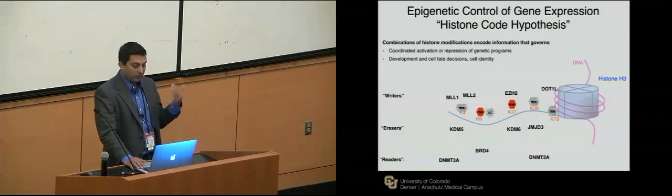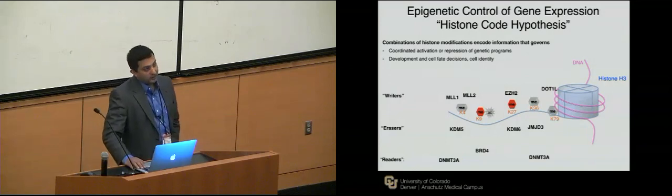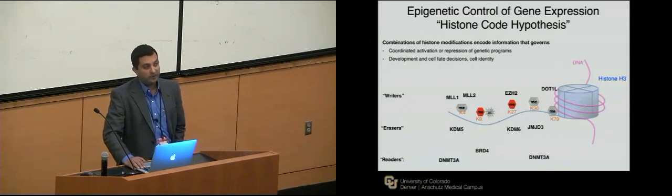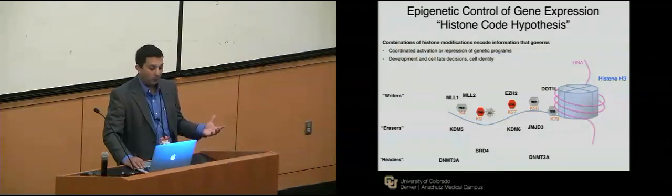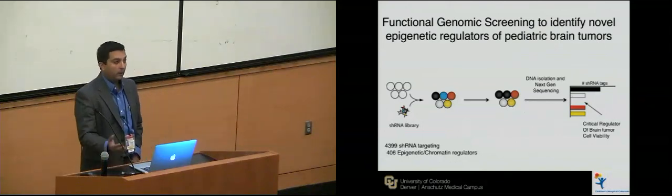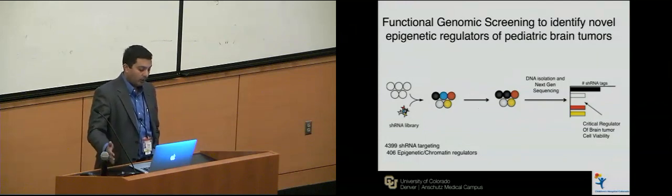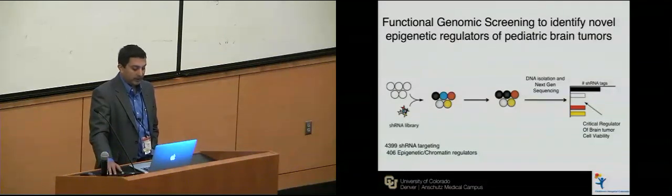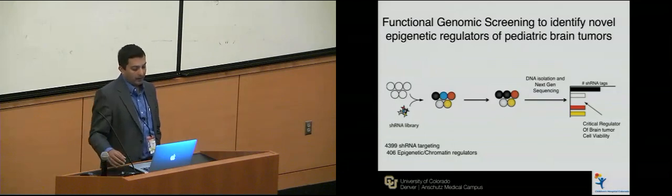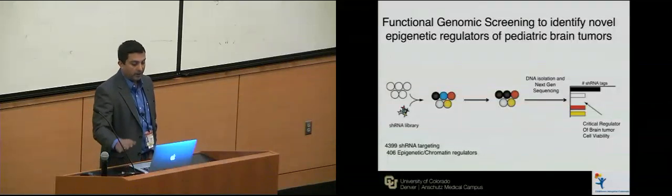What we started doing was a large-scale RNAi screen targeting all epigenetic regulators — proteins annotated to have some sort of chromatin modifying domain or role. We came up with a list of 406 genes. We worked with a company to create an shRNA pool with 4,399 shRNAs targeting all of these genes in a lentiviral backbone.